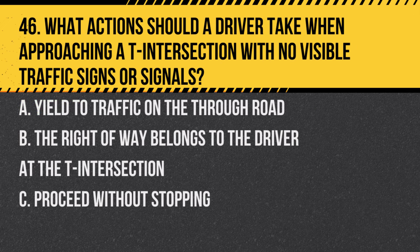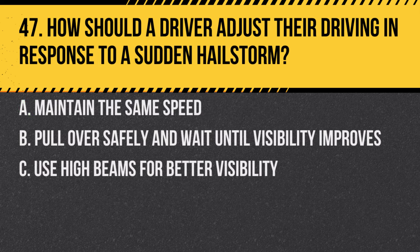Question 46. What actions should a driver take when approaching a T-intersection with no visible traffic signs or signals? A. Yield to traffic on the through road. B. The right-of-way belongs to the driver at the T-intersection. C. Proceed without stopping. Answer: A. Yield to traffic on the through road. Drivers at a T-intersection must yield to traffic on the continuing road.